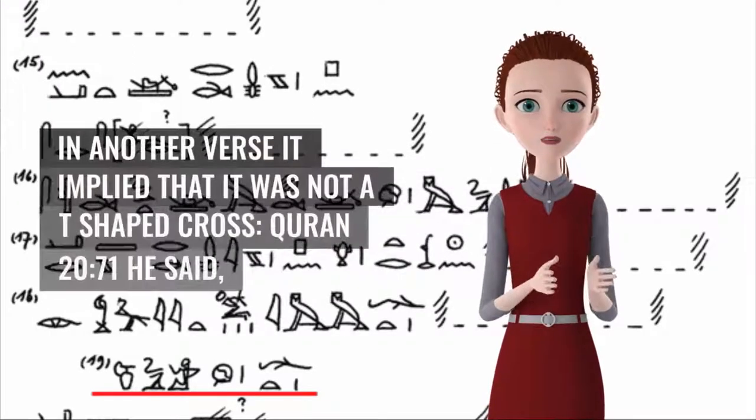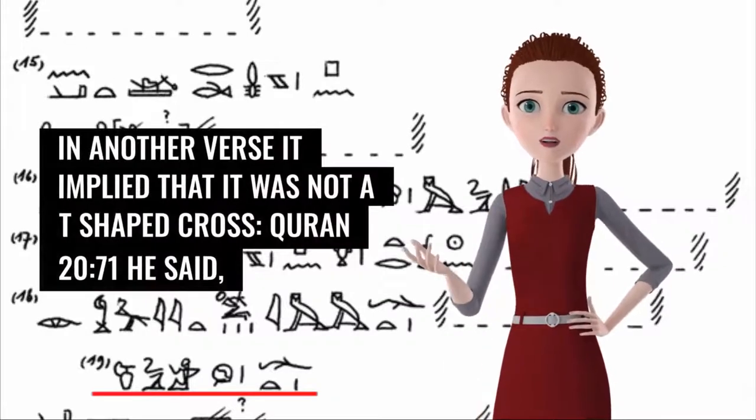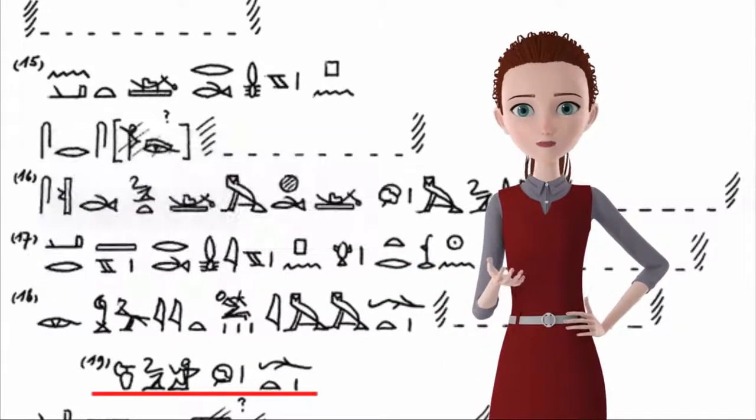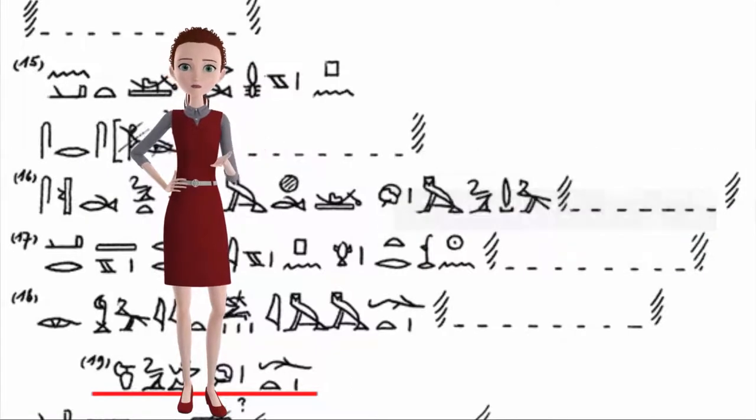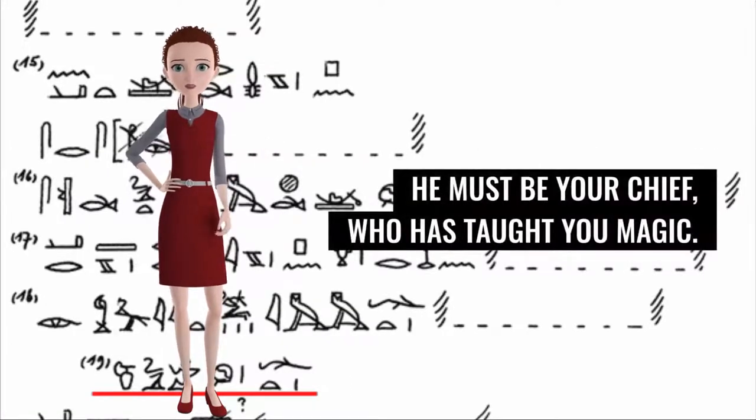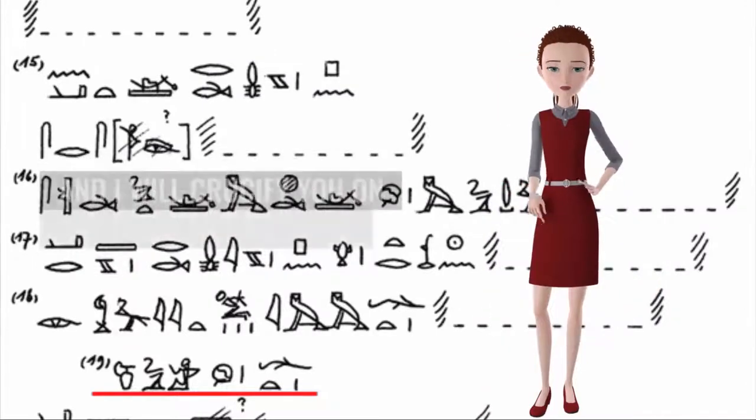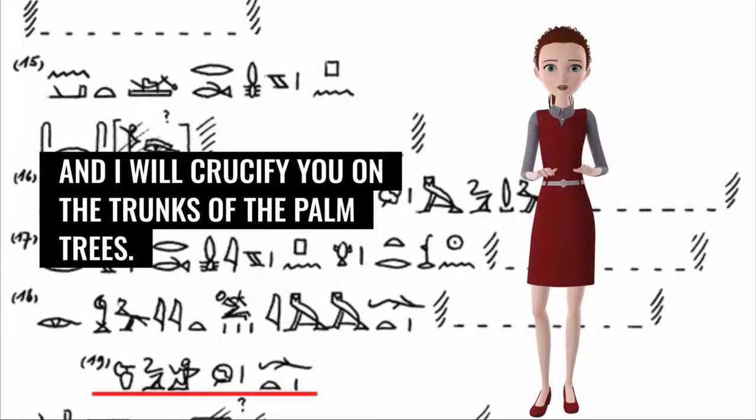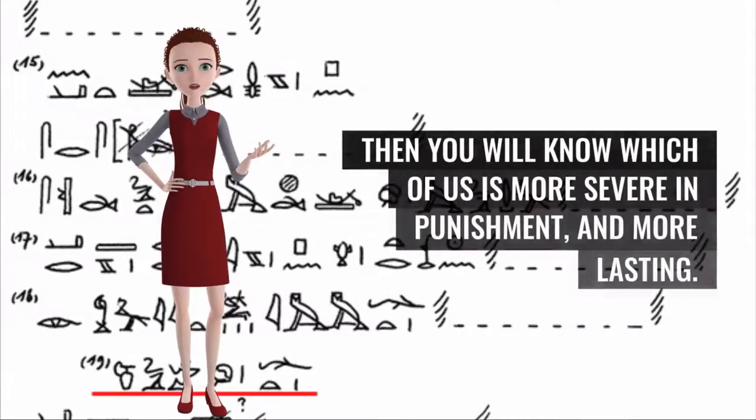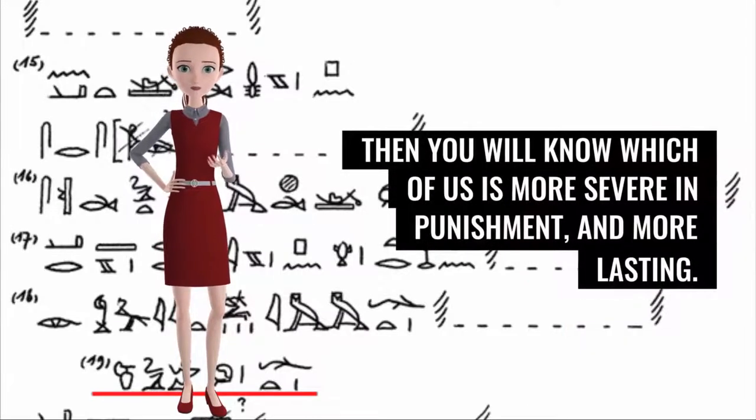In another verse, it implied that it was not a T-shaped cross. Quran 20:71: He said, did you believe in him before I have given you permission? He must be your chief who has taught you magic. I will cut off your hands and your feet on alternate sides, and I will crucify you on the trunks of the palm trees. Then you will know which of us is more severe in punishment and more lasting.